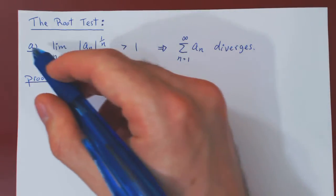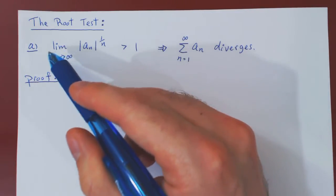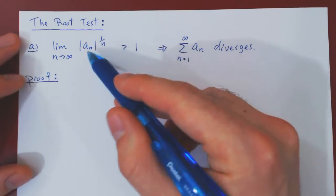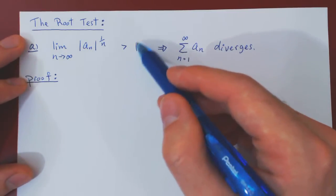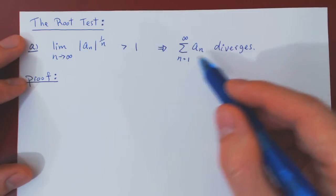Ok, so in this video we will prove part A of the root test. If you recall, part A states that if the limit as n tends to infinity of the nth root of a_n in absolute value is larger than 1, then the implication is that the corresponding series diverges.